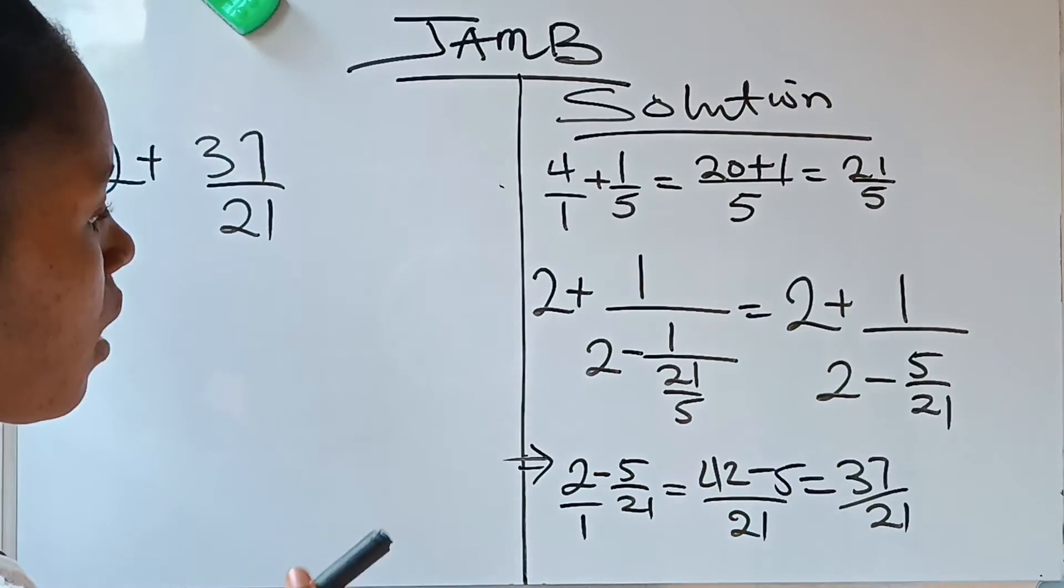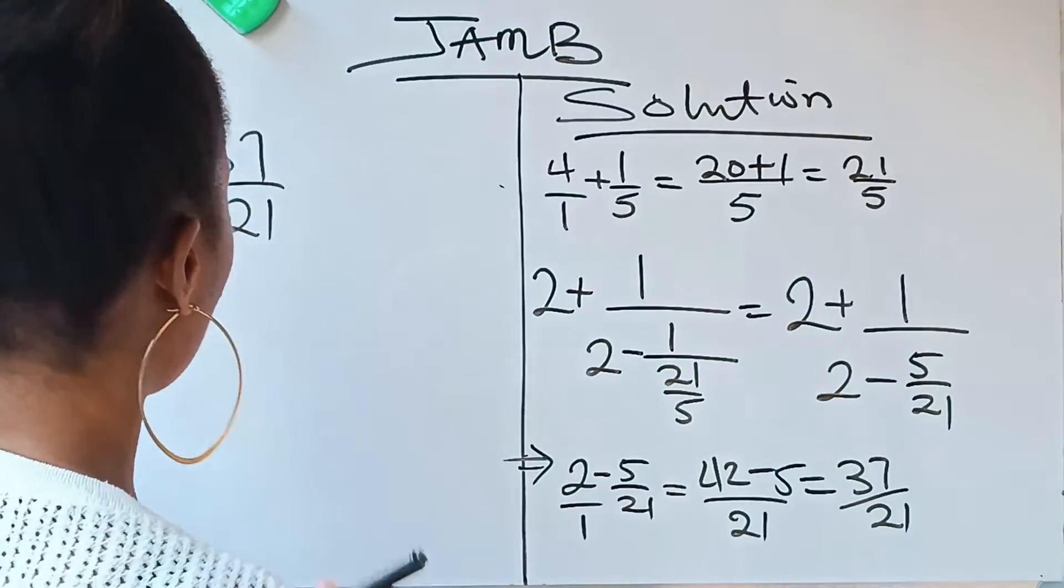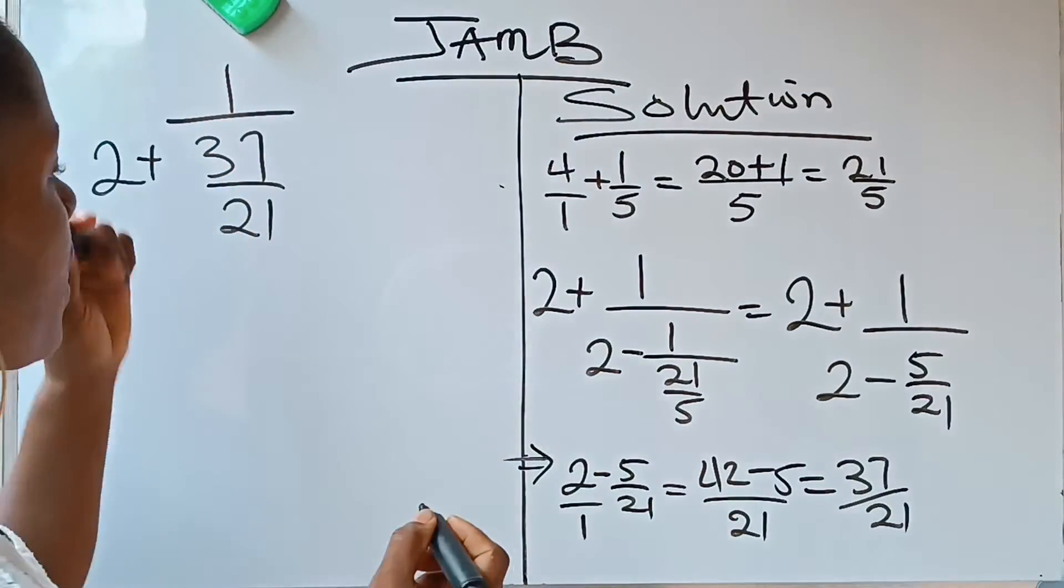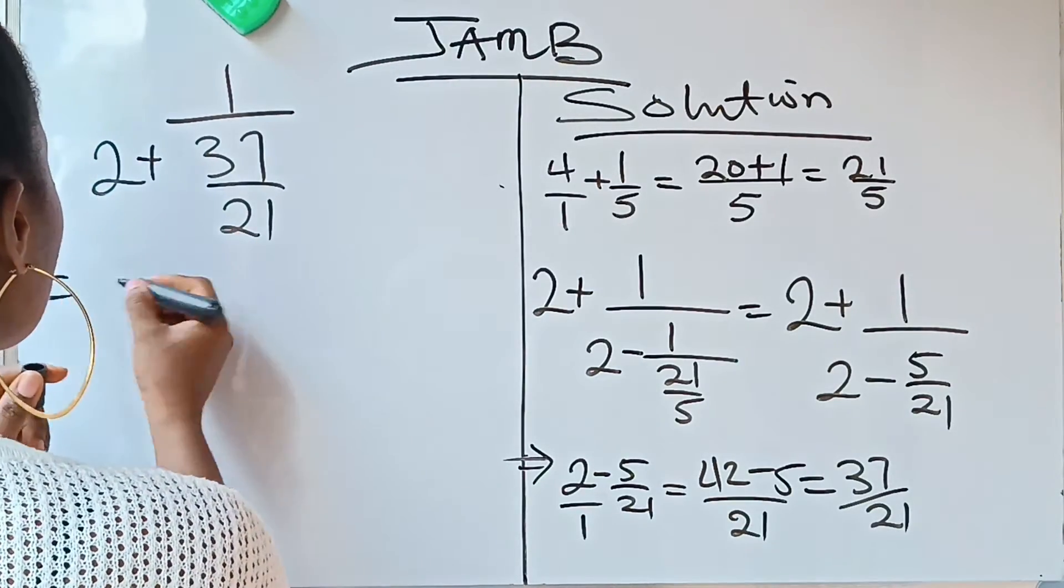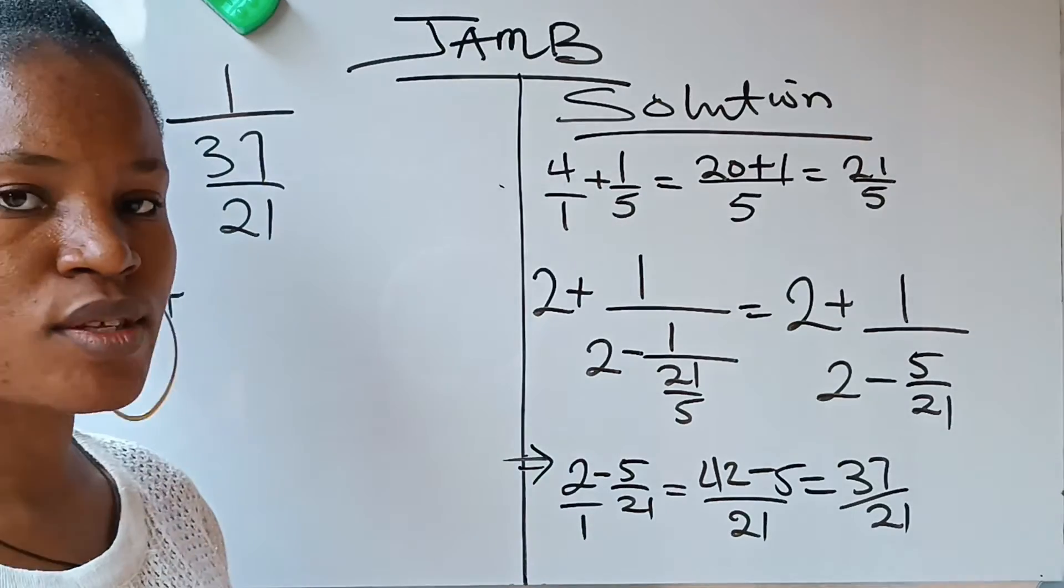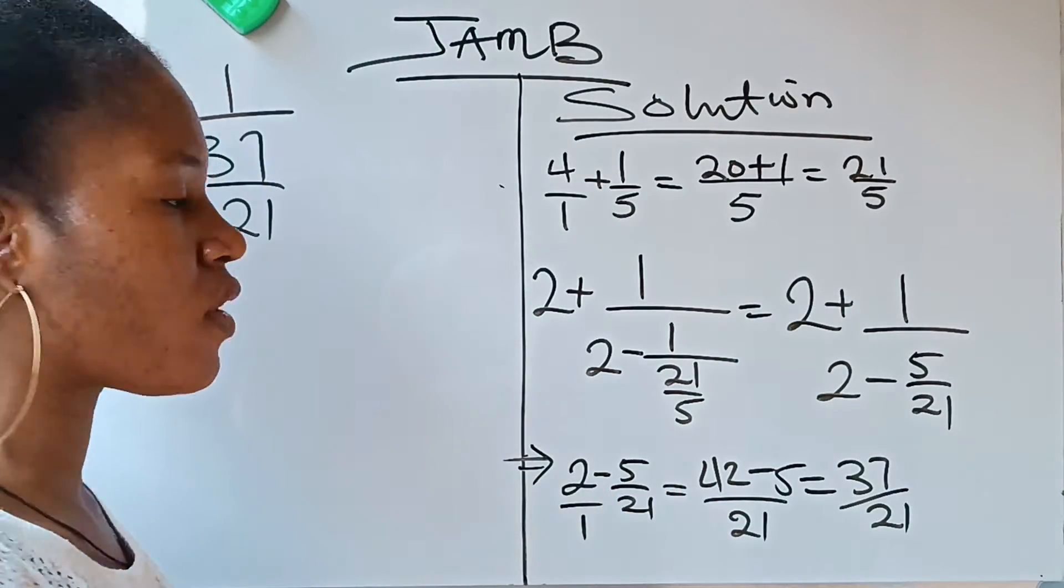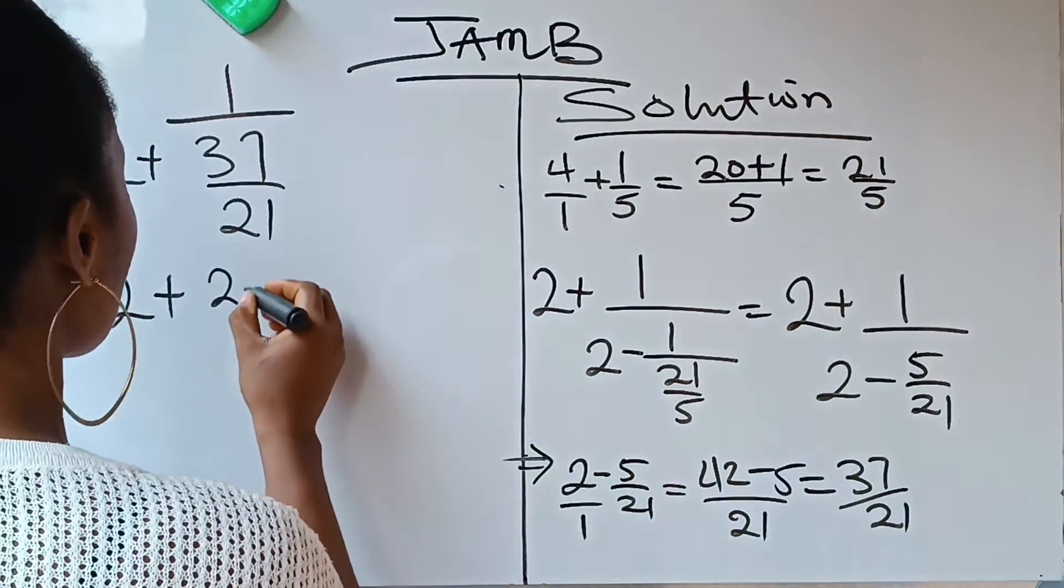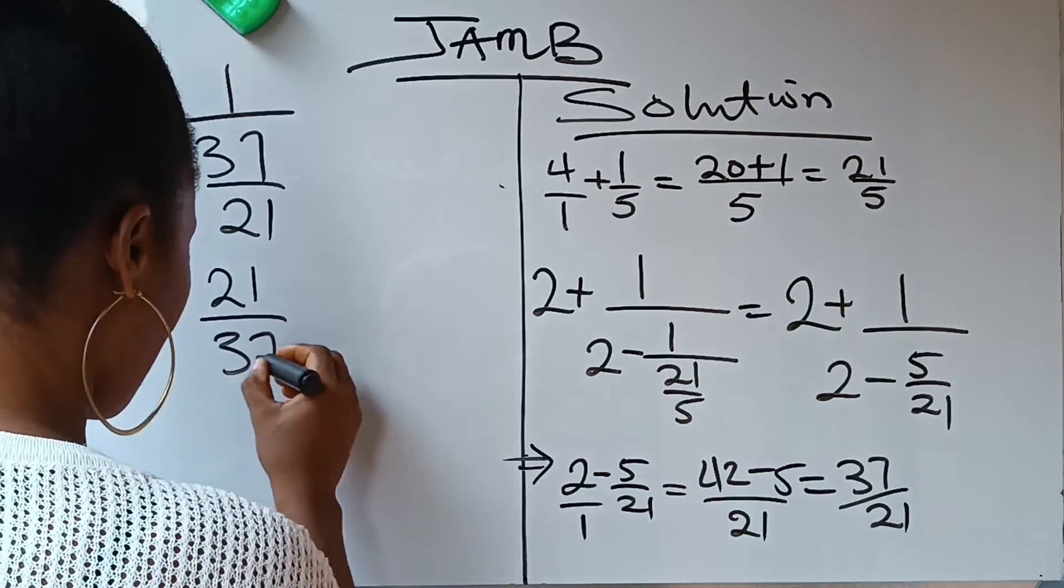So you are going to have 2 plus 1 over 37 over 21. That is what you have now. 1 over 37 over 21. This is equal to 2 plus, the 1 over means the inverse of 37 over 21, which is going to give you 21 over 37.